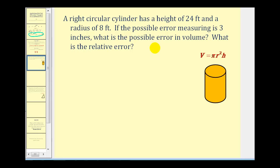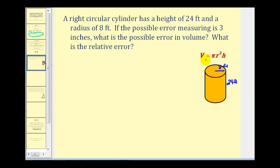Here we have a right circular cylinder that has a height of 24 feet and a radius of 8 feet. If the possible error in measuring is 3 inches, what is the possible error in volume? The volume formula is V equals pi r squared h. Before we determine the relative error, if the measurements can be off by as much as 3 inches, we first need to determine the propagated error, which we're going to estimate by using differential V.